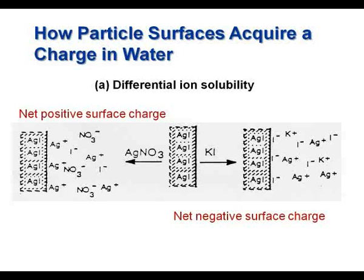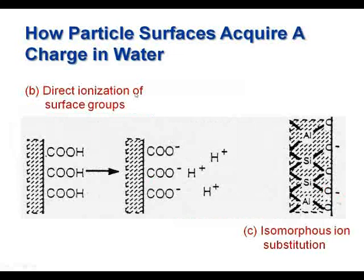Mechanism B — direct ionization of surface groups — is commonly observed with all metal oxide surfaces as well as materials containing carboxylic acid and amine-containing functional groups. In this category are proteins, ionic polymers, and polyelectrolytes, many of which are widely utilized in cosmetic, pharmaceutical, and agricultural formulations. These materials acquire their charge mainly through ionization and dissociation. The degree of charge development, the net molecular charge, and its sign — positive or negative — depends strongly on the pH of the solution.